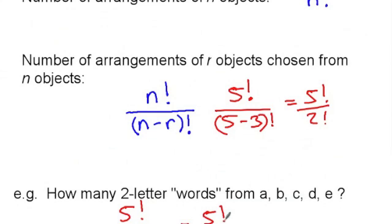Five factorial over three factorial this time, which is just five times four, twenty two letter words from a, b, c, d and e.